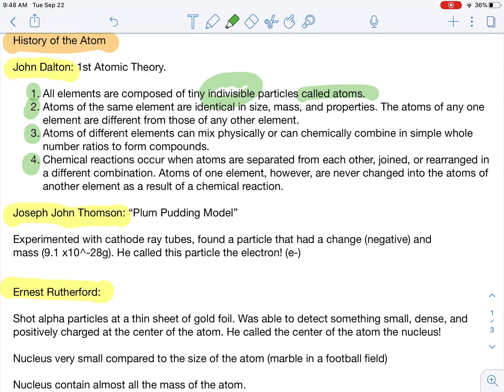Atoms of the same element are identical in size, mass, and properties. Size and properties is very true. Properties can change a little bit, actually, but mass, the mass of individual atoms of the same element can change. Those are called isotopes. We're going to have a lecture on that.